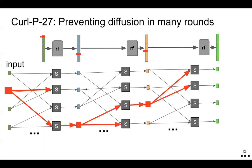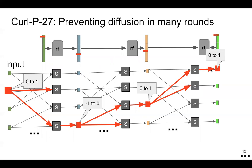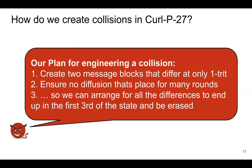What we're going to try to do is prevent diffusion through many rounds. In this case we have a single trit difference — the round function is applied and we still have a single trit difference. The round function is applied again, still a single trit difference. Our plan will be to create two message blocks that differ at only one trit, ensure that no diffusion takes place for many rounds, and arrange that all the differences end up in the first third of the state. By the time diffusion occurs, there are so few rounds left that we can arrange for that small number of differences to be in the first third, where they'll be erased by the next message block.